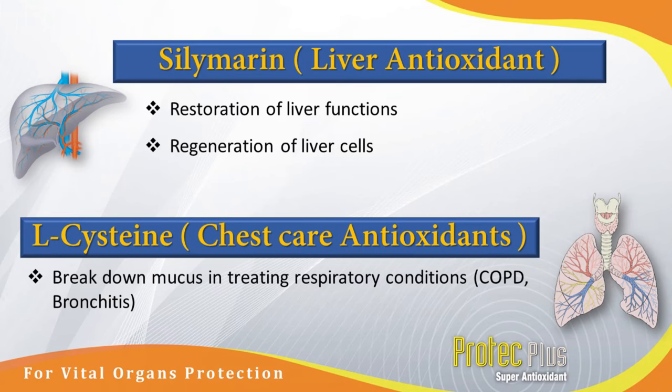Now that you have to call the chest antioxidant is an L-cysteine. L-cysteine is a case of bronchitis, so you can break down the blood pressure.